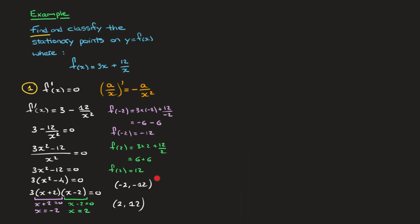Now that we've found the stationary points, we move on to the second thing we had to do: classify them. As I said at the beginning, to classify the stationary points we're going to study the sign of the derivative, using a sign table. To do that properly, the first thing we need to do is write the derivative f'(x) in its fully factored form.